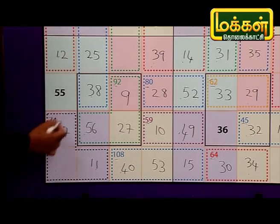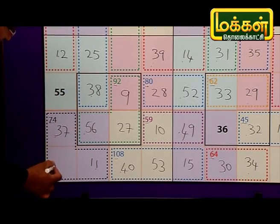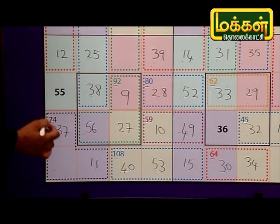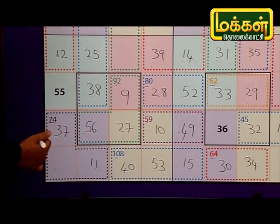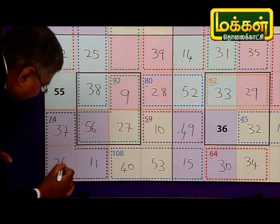If we add this 4 number, it's 130. What is this? 130 minus 106. 104 is 26.